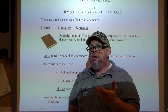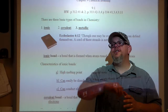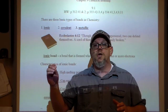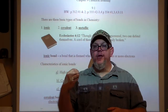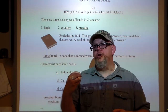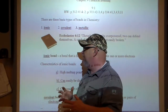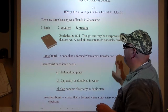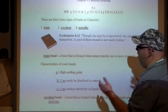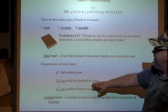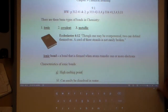With ionic bonding, basically one atom is going to transfer one or more electrons to the other atom, which will receive that transferred electron. That's ionic bonding. Characteristics of ionic bonding: high melting point, can easily be dissolved in water, and can conduct electricity.